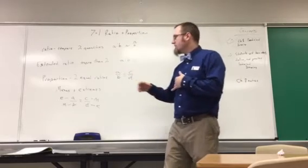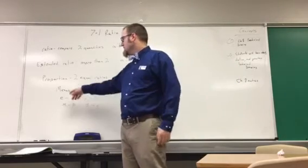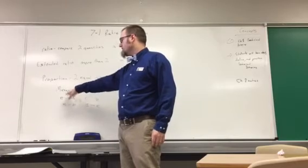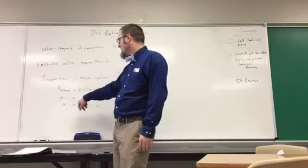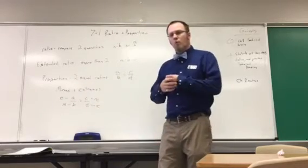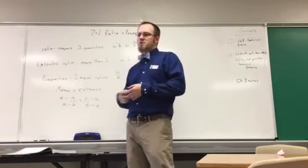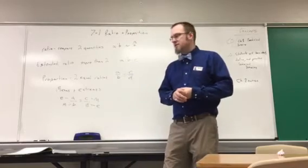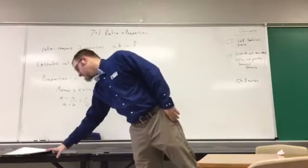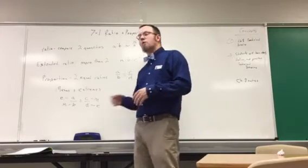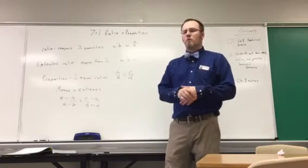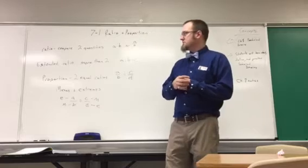So then we have the means and extremes. The extremes would be the first numerator and the second denominator, and the mean would be the first denominator and the second numerator. Whatever you need to do to label those to keep them straight in your head. If you look at the book itself on this page, which is 462, it has some color coded, which might be a good way to put them into your notes to help you remember which one is the mean and which one is the extreme.